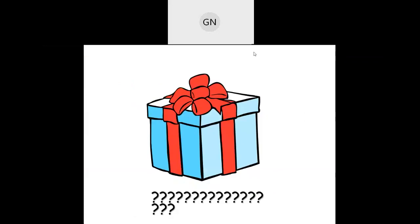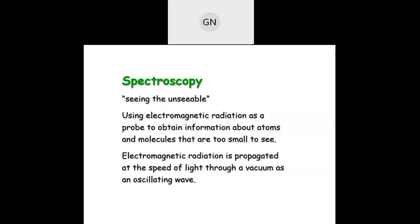What surprises are there inside this topic? Spectroscopy — as the name indicates, 'spectra' means colors and 'scopy' means measurement — is the measurement of colors. It is just like a treasure house, a gift pack wherein you can find out almost any functional group contained inside an organic molecule.